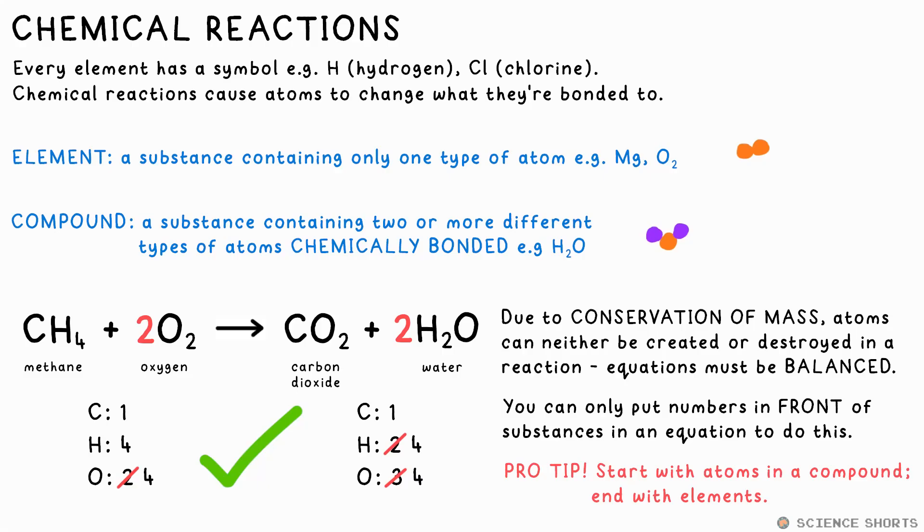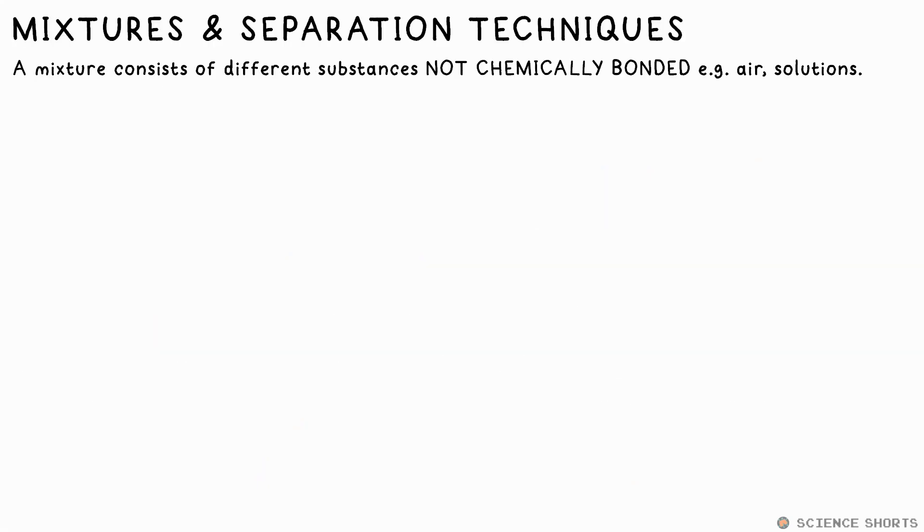A mixture is any combination of different types of elements and compounds that aren't chemically bonded together. For example, air is a mixture of oxygen, nitrogen, carbon dioxide and more. Solutions are mixtures too, like salt water. It's a mixture of water and sodium chloride. The sodium chloride is dissolved in the water, you can't see it.